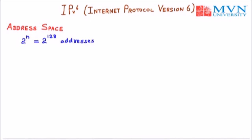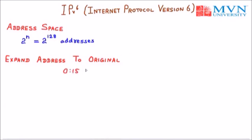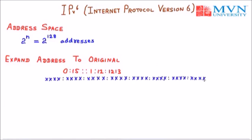Now we will take a numerical example to understand the IPv6 address — the type you might do in an examination. You have to expand a given compact address to its original full form. For example, we are given an address such as 0:15::1:2:1:3, and we have to expand it to the original IPv6 address. First, draw a dummy IPv6 address template with 8 blocks.